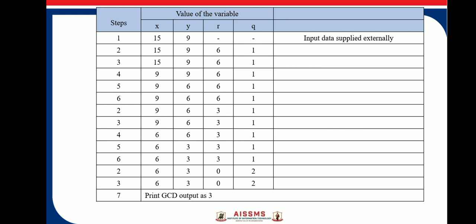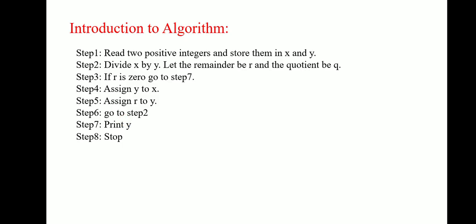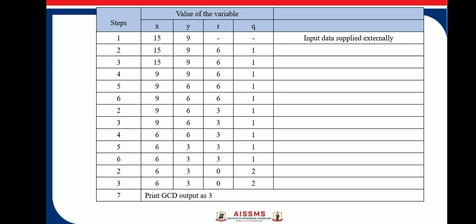So here, Step 3 is if R is 0, go to Step 7. Else, go to Step 4, which is assign Y to X. Step 5 is assign R to Y and go to Step 2. Now here, reminder is 6, which is not equal to 0. So therefore go to Step 4. Step 4 is assign Y to X.